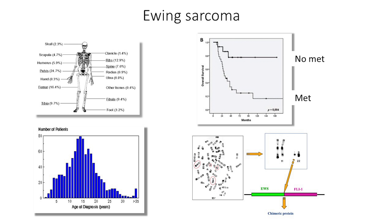Ewing sarcoma is mostly observed in teenagers; the median age is 15 years of age. In localized disease, the treatment is usually quite efficient with 75% five-year survival. But as soon as you have a metastasis or a relapse, as shown on the slide, the prognosis is really very poor.